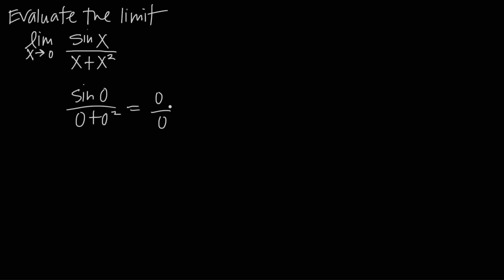When we get an indeterminate form by evaluating at the number we're approaching, we know we're going to want to use L'Hôpital's rule to evaluate the limit. L'Hôpital's rule tells us that we can replace the numerator with its derivative and replace the denominator with its derivative, and then doing that once — or sometimes many times — will reduce this function to a point where we can evaluate at the number we're approaching.